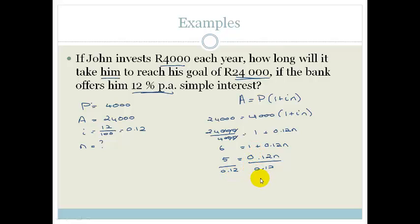And we end up with N equals 41.67. Now, you do realize you can't have 0.67 of a year. So, therefore, we need to round it up. So, therefore, N equals 42 years. Sure, it's a long time.